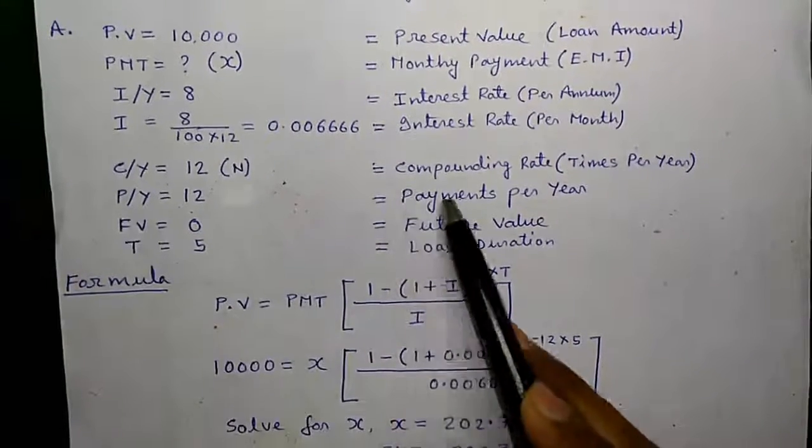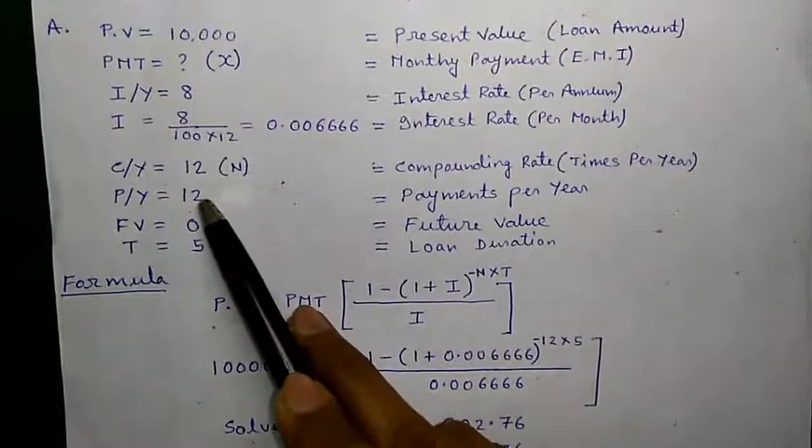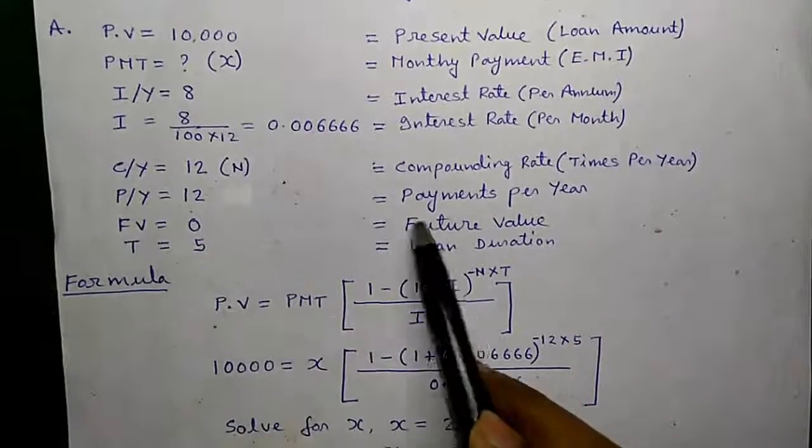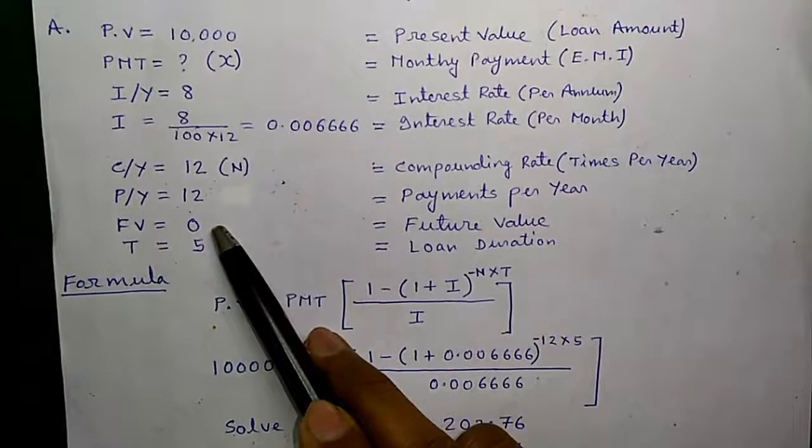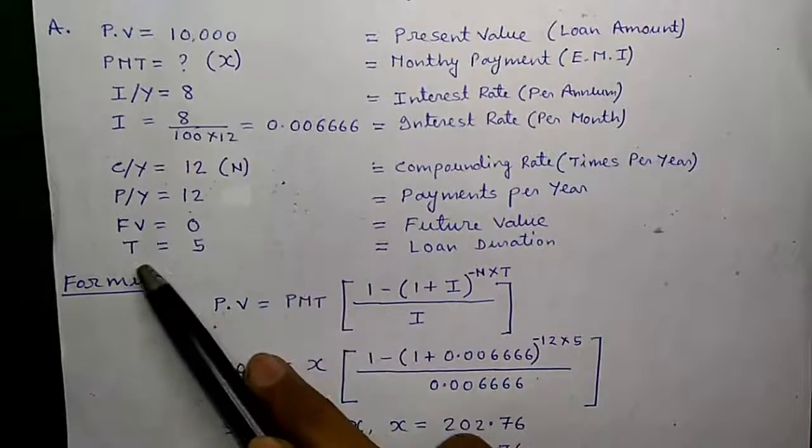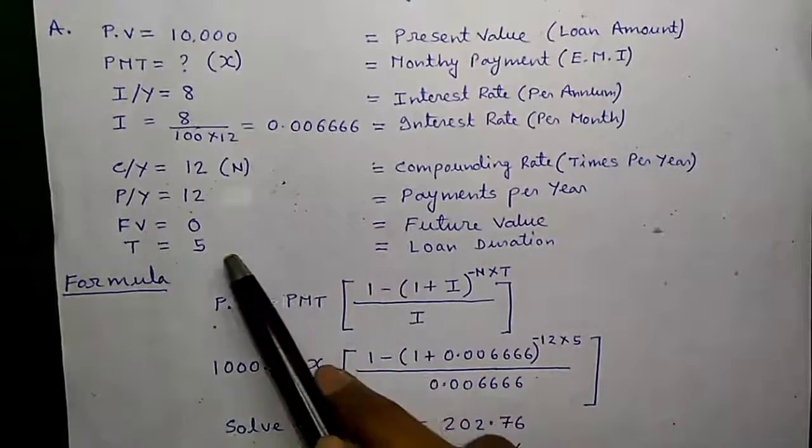P/Y or payments per year is 12 since it is monthly payment. FV or future value equals 0 since the loan is closed fully after 5 years in future. T or loan duration is 5 years.